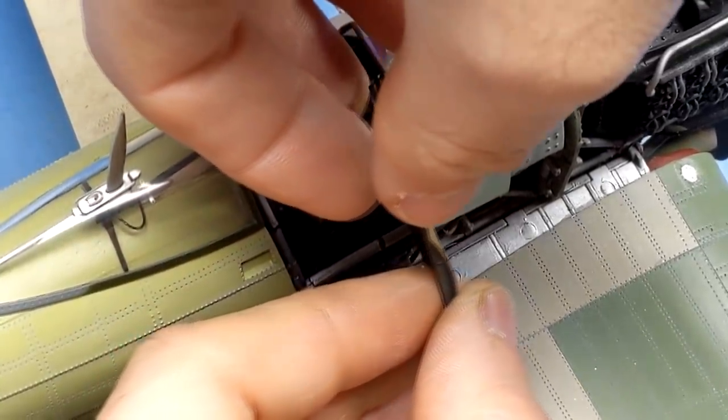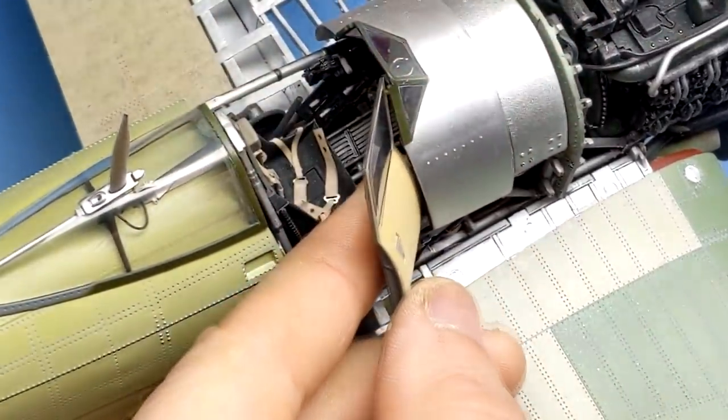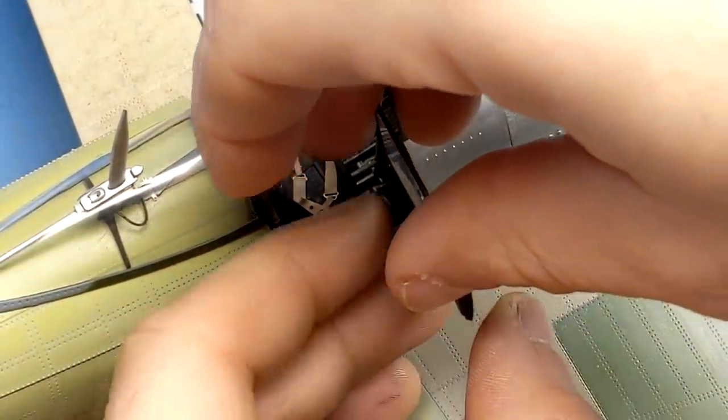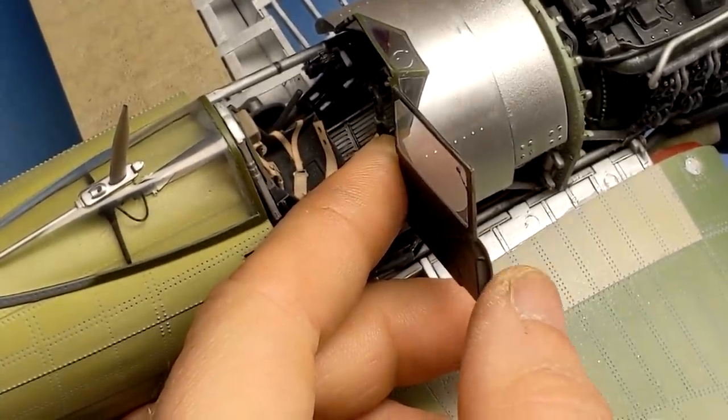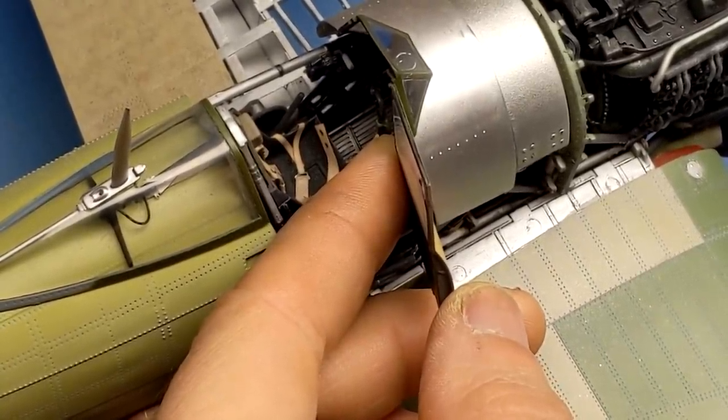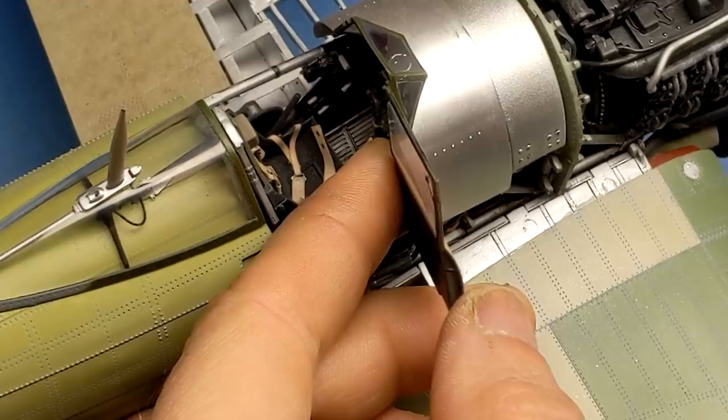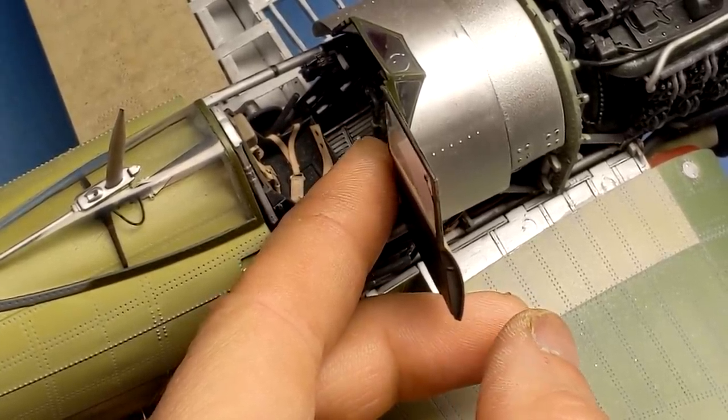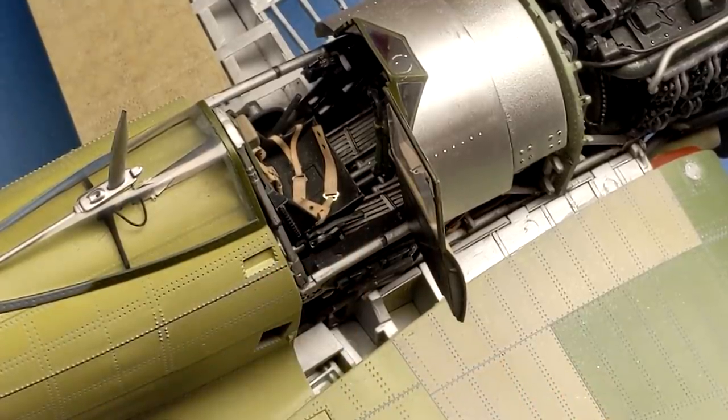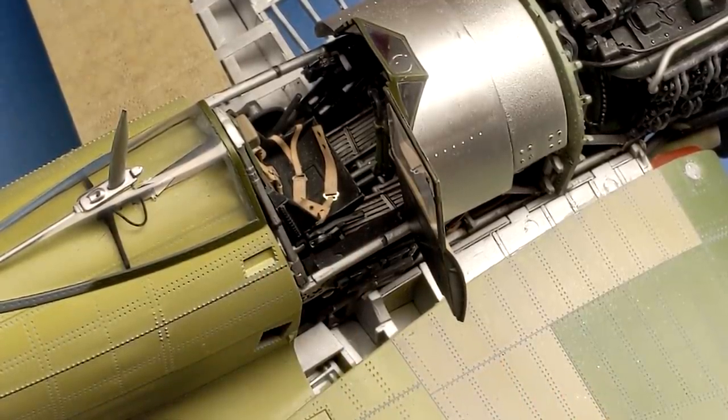As for building another 1:24 Airfix kit, I can't see myself doing one in the near future. It's not because it's a bad kit, it's just one that requires so much more work to have it look good in the end. If one of their new Hellcat kits fell into my lap at a decent price, I would at least have a better understanding of how much more work I was getting myself into. I think I would have a better kit in the end because I would go into it knowing what a challenge it was going to be.